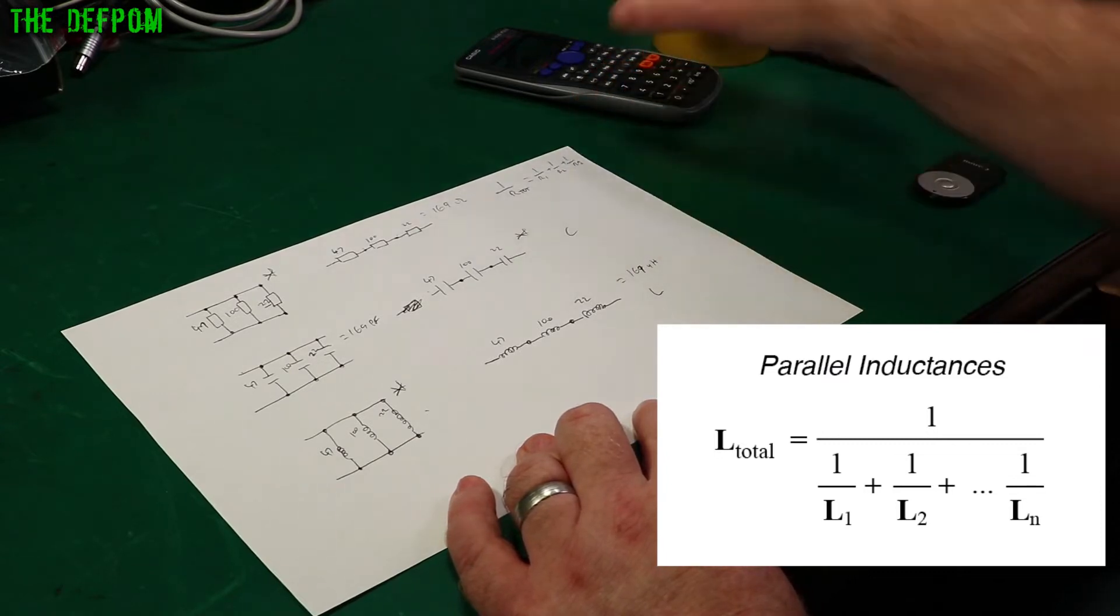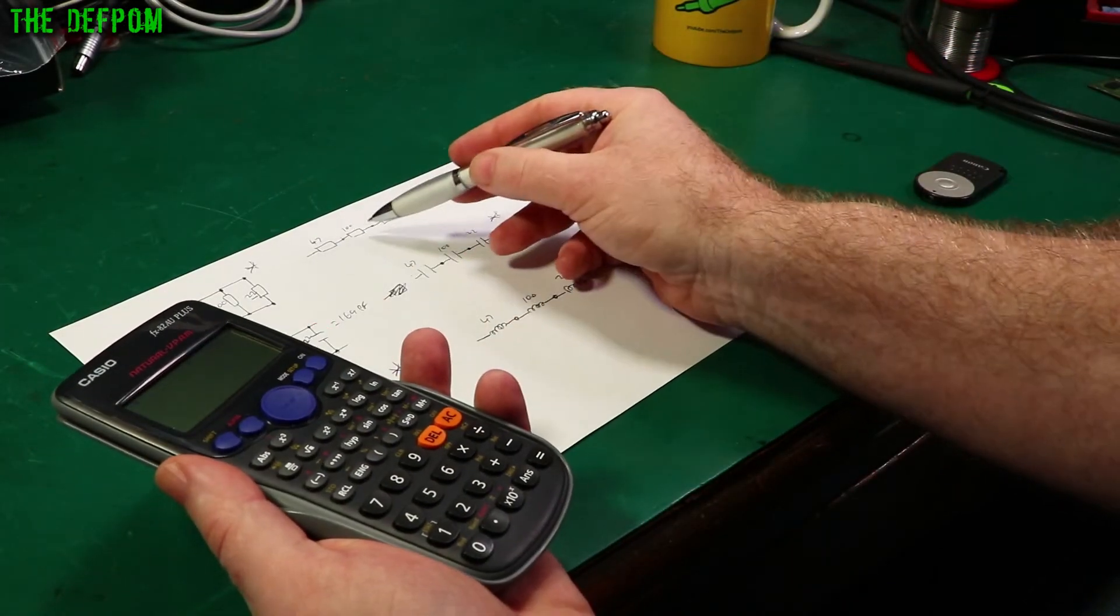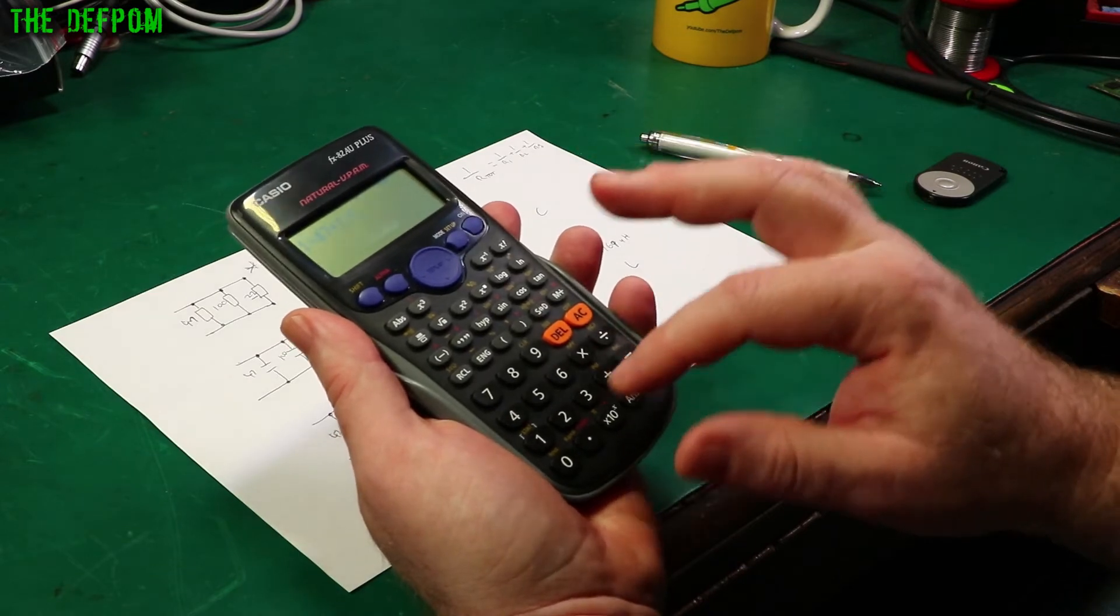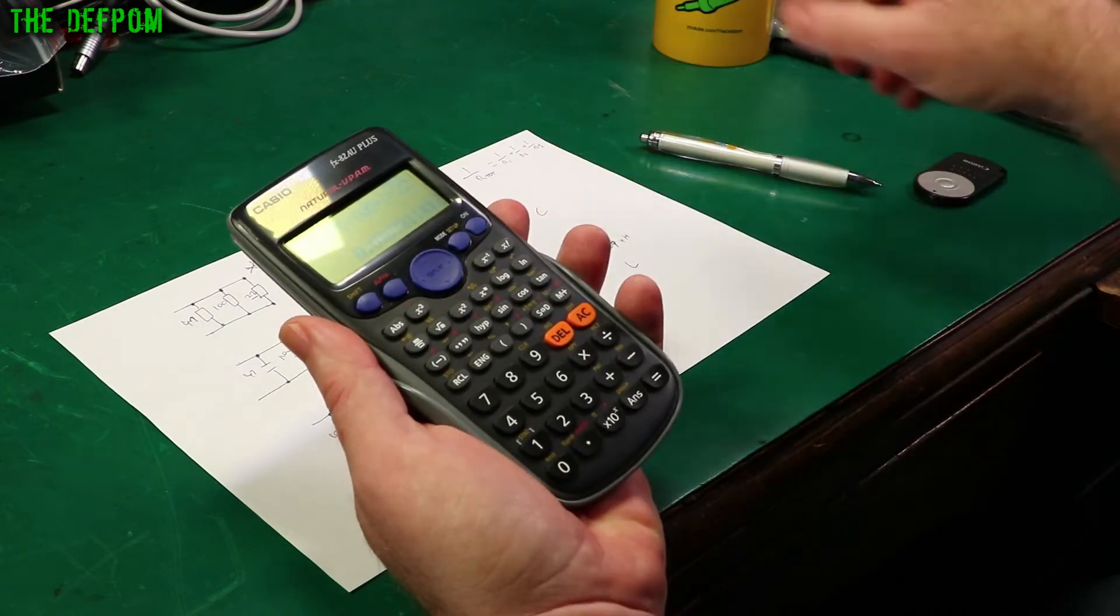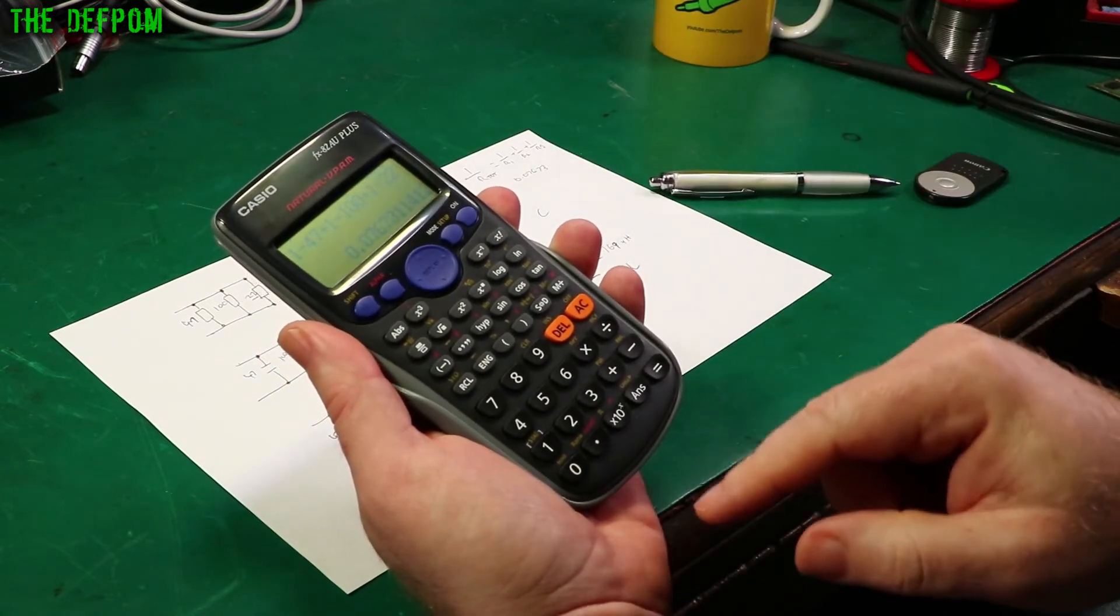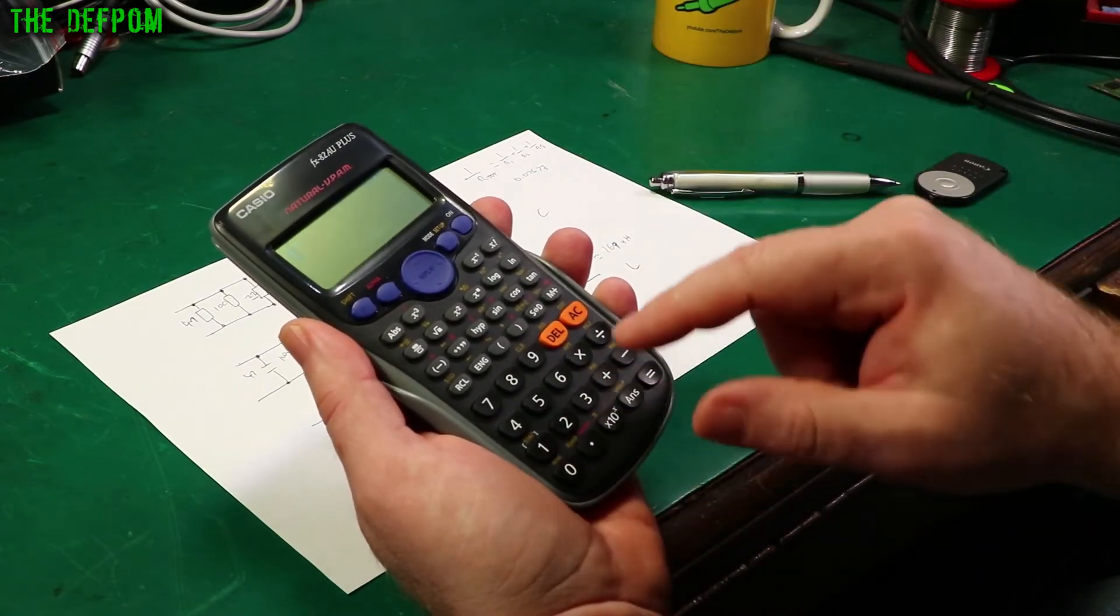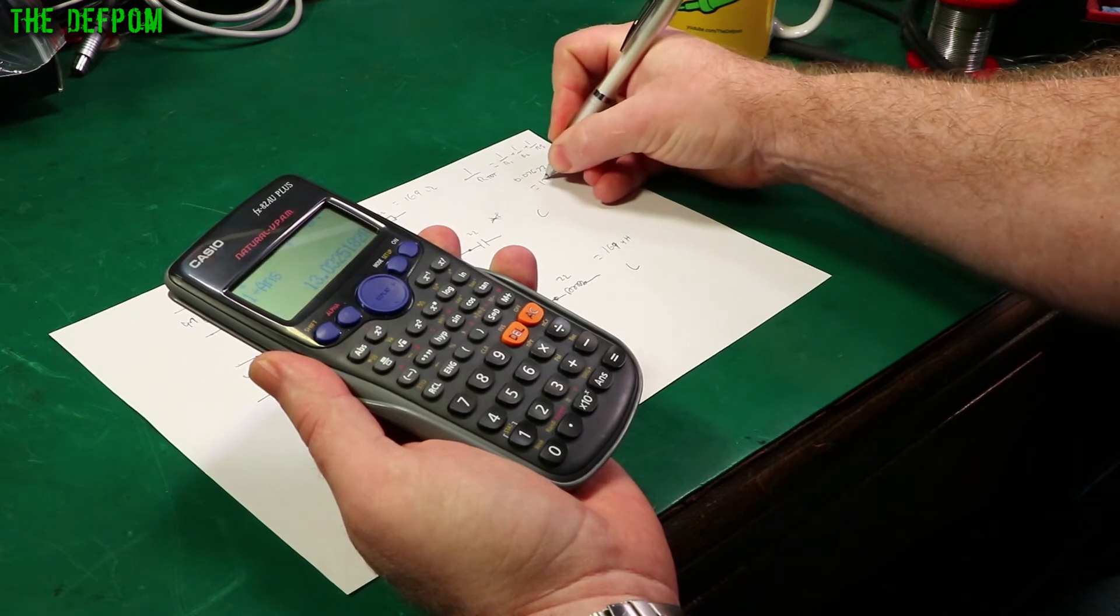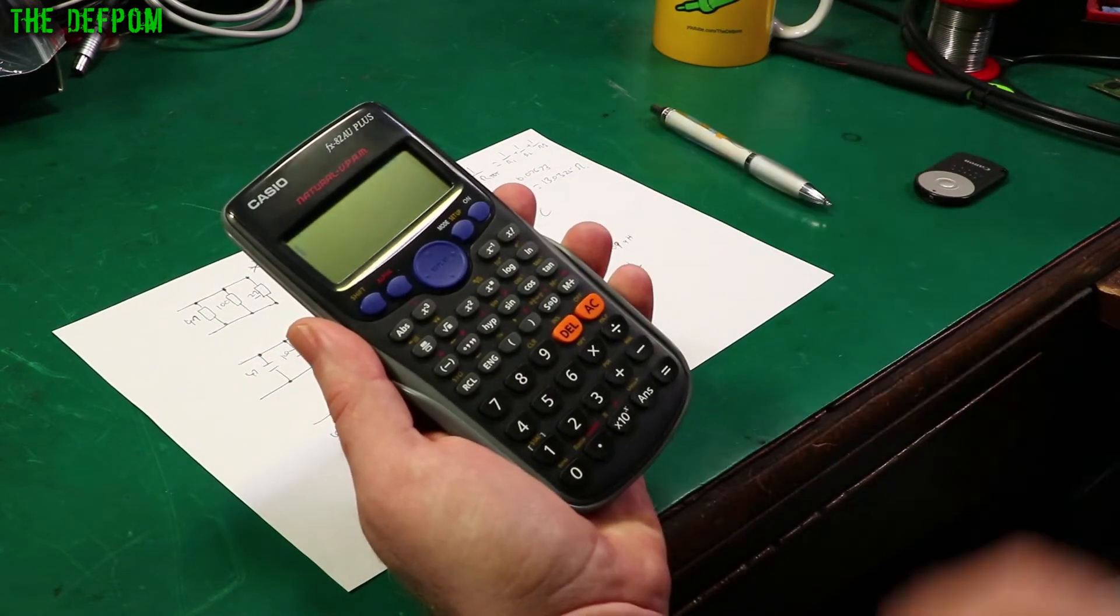You can work this out fairly easily with a calculator. Doesn't take much effort. So let's turn this thing on and I shall show you. So we've got 47, 100, 22. It's the same value on all of them. So that's 1 divided by 47 plus 1 divided by 100 plus 1 divided by 22 equals. In this case that equals 0.07673. Now this actually remembers the last answer so this makes it easier to do. Then the resistance total is 1 divided by that answer. This equals 13.0325 ohms. That's enough precision. You got that?